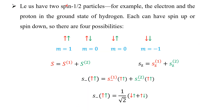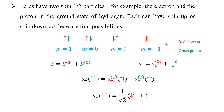Let us have two spin-½ particles — for example, the electron and the proton in the ground state of the hydrogen atom. Each can have spin up or spin down, so there are four possibilities: both electron and proton are in the up state; electron is up and proton is down; electron is down and proton is up; and both are down. Here, red color shows the electron and green shows the proton.